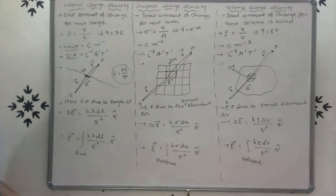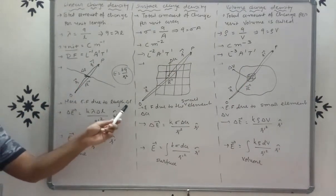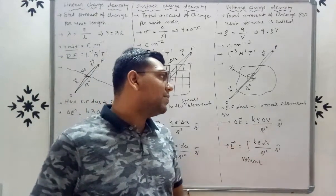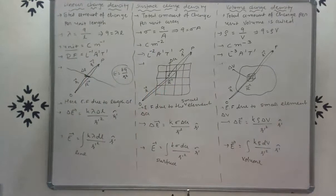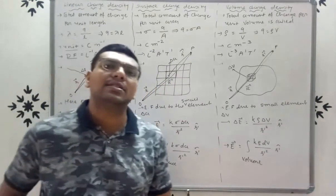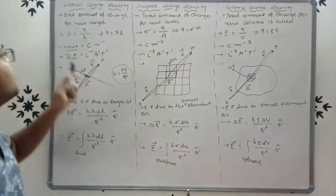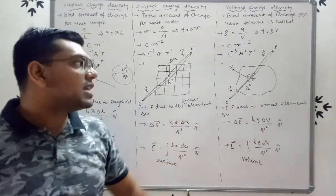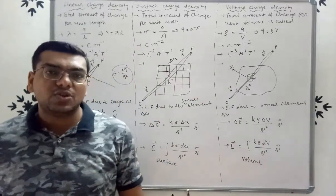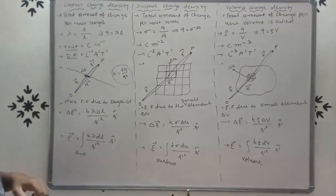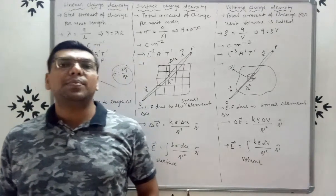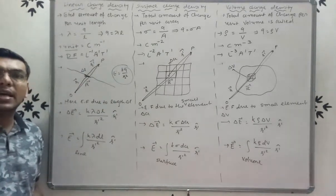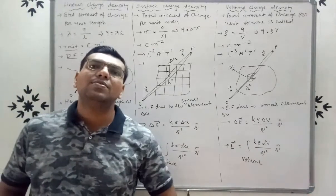These are the formulas for electric field due to a length element δL, an area element δA, and a volume element δV. These questions are asked in exams — you may be asked to explain linear, surface, or volume charge density. If you remember the definition, you can easily derive the formula, dimensional formula, and unit.